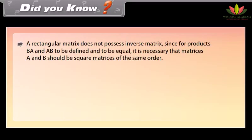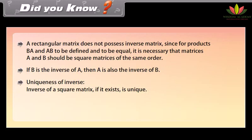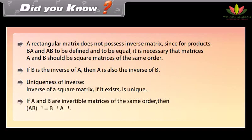Did you know? A rectangular matrix does not possess an inverse matrix, since for products BA and AB to be defined and equal, it is necessary that matrices A and B be square matrices of the same order. If B is the inverse of A, then A is also the inverse of B. Uniqueness of inverse: the inverse of a square matrix, if it exists, is unique. If A and B are invertible matrices of the same order, then inverse of AB equals inverse of B times inverse of A.